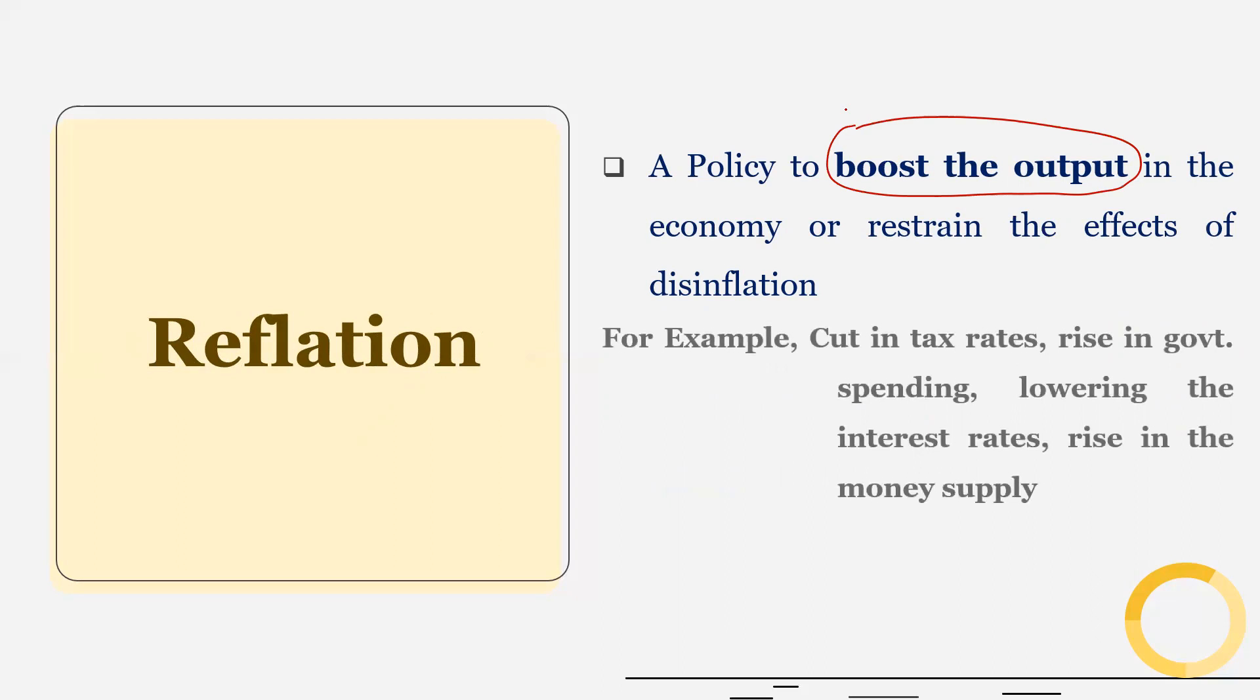So, for example, cut in tax rates, rise in government expenditure, lowering the interest rates, rise in the money supply. These policies can actually boost the output in the economy or help us to restrain the effects of disinflation. So, basically, to curb the deflationary pressure in the economy, government or the central bank uses the policies to restrain the effects of disinflation and that is known as reflation.